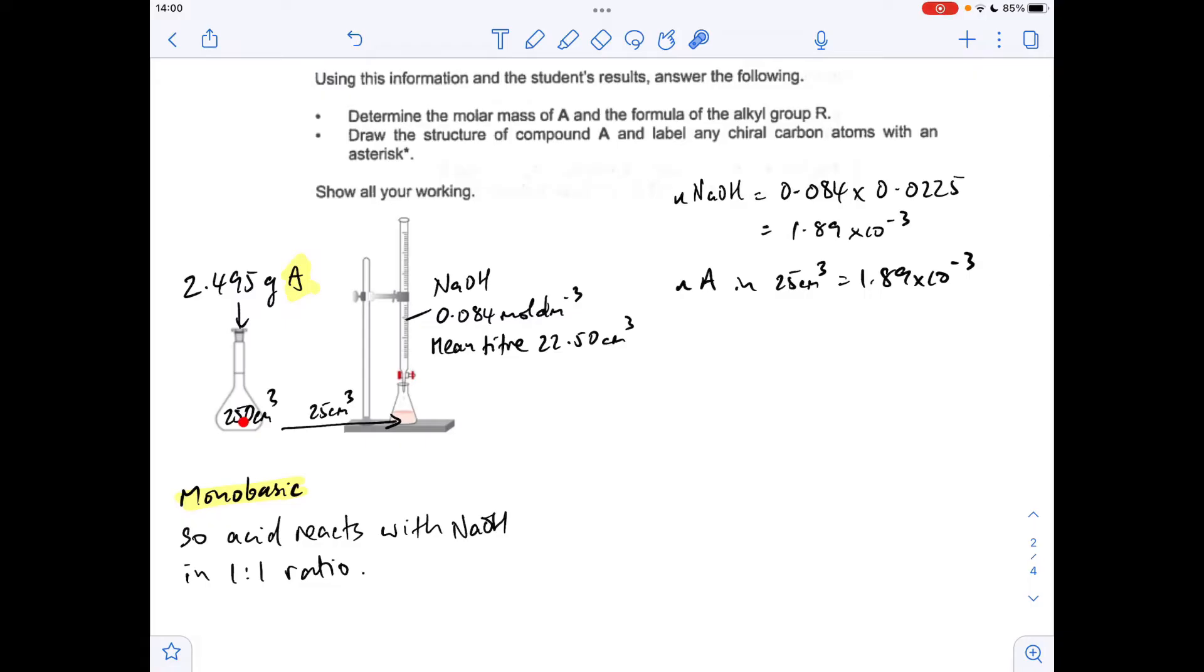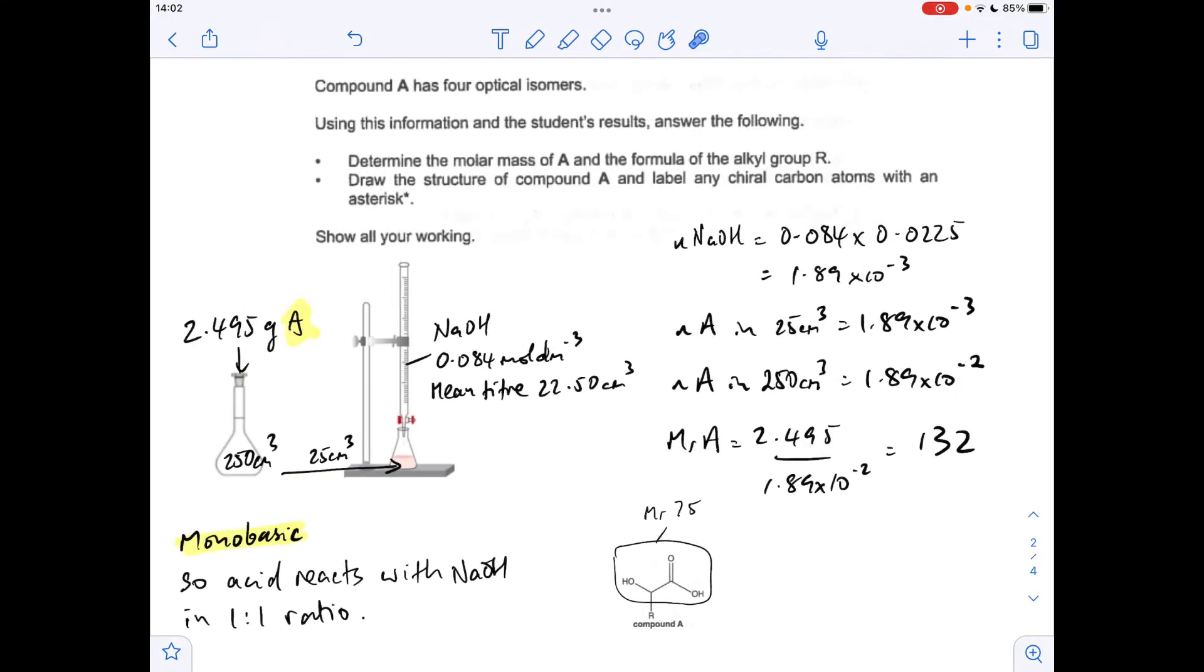Now we want to know how many moles of the acid A is in the 250 cm³, because essentially it's the moles of A in that mass. So we multiply by 10 because the 25 is a tenth of the 250. So now we know the moles in 250, the MR of A is going to be the mass divided by the moles, which comes out at 132.